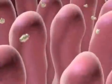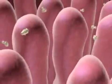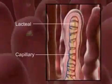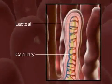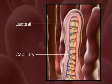The walls are covered with villi where nutrient absorption takes place. The structure of each villus contains a capillary and lacteal to pick up the digested nutrients.